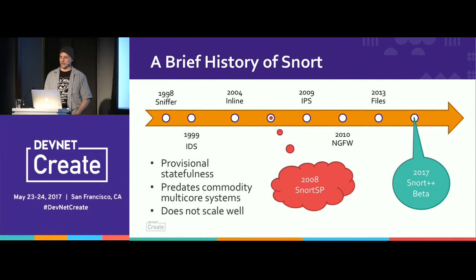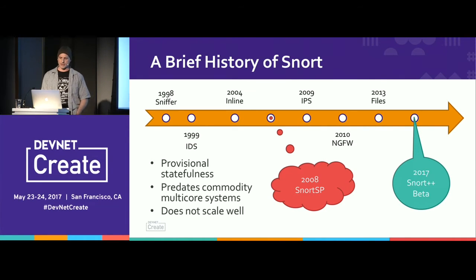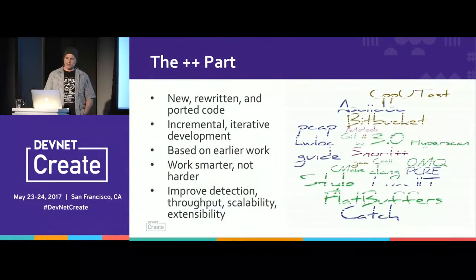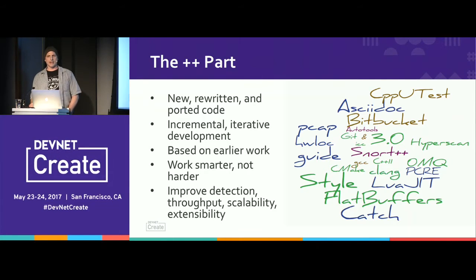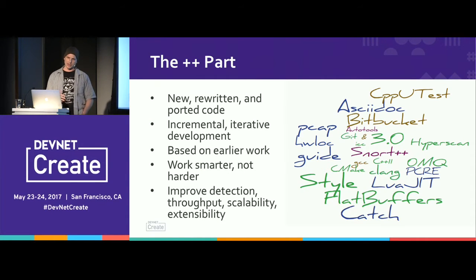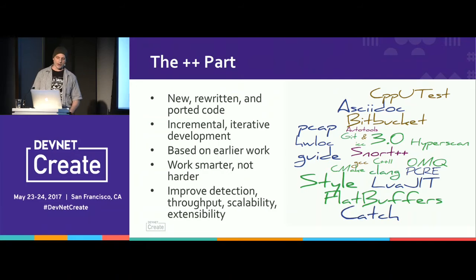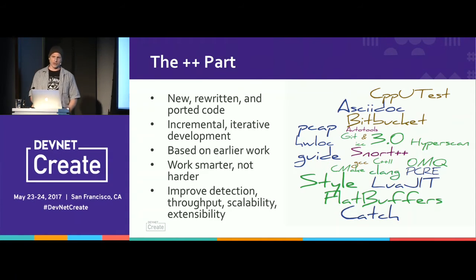Roughly in 2013, I got another opportunity to work on the next generation of Snort, and that's when Snort++ actually began. The ++ represents an increment of the major version from 2.x to 3.0, it means we're using C++, and it means we're doing incremental iterative development. It's a walking skeleton concept — working smarter, not harder. The overall goals are to improve both detection and throughput at the same time, as well as improve scalability and extensibility.